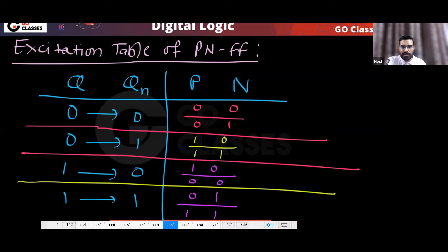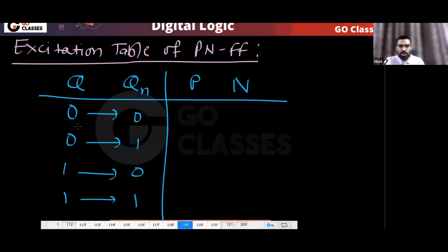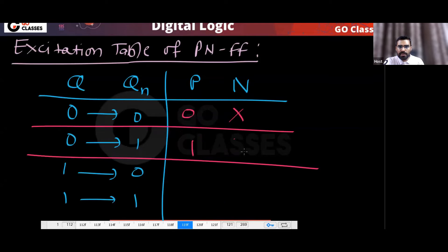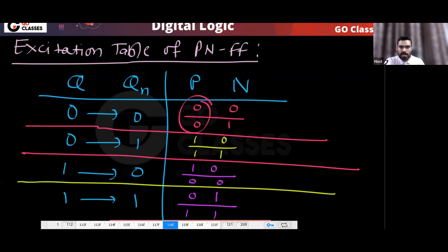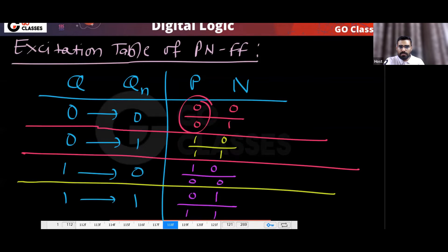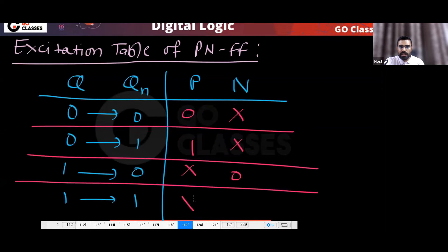So the excitation table for the PN flip-flop is: Q→Q_next = 0→0: P=0, N=don't care; Q→Q_next = 0→1: P=1, N=don't care; Q→Q_next = 1→0: P=don't care, N=0; Q→Q_next = 1→1: P=don't care, N=1. This is the excitation table.